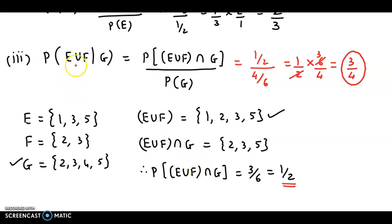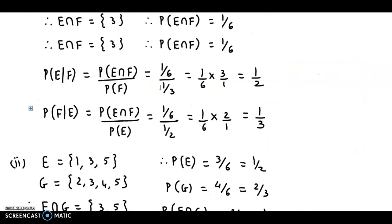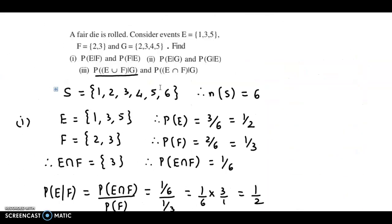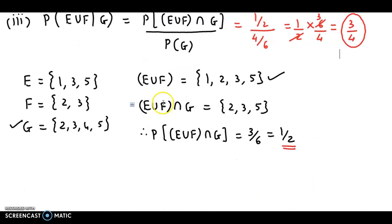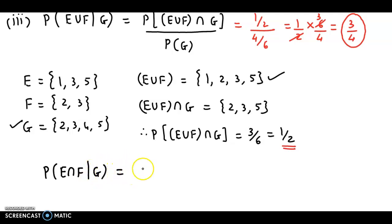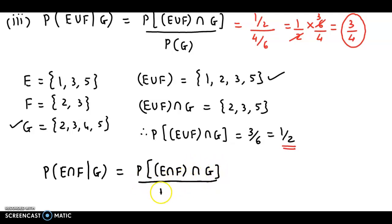This part is done. Next, the question is probability of E intersection F given G. Probability of E intersection F given G can be obtained as probability of E intersection F intersection G upon probability of G.